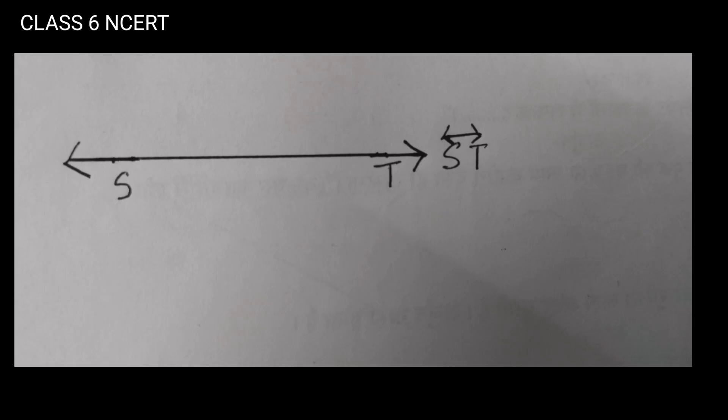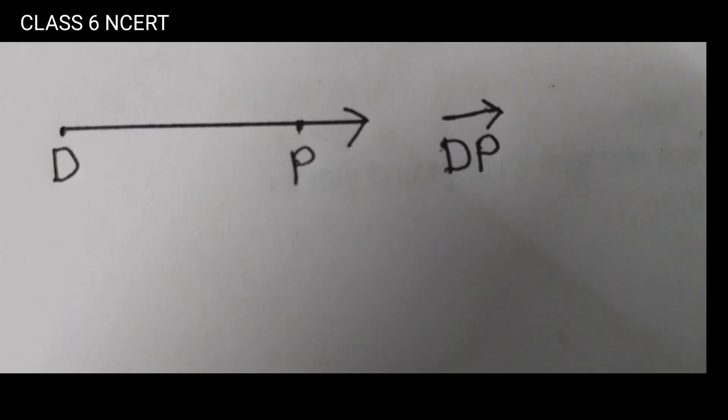It is denoted by line ST, capital letters ST with a line on top, a double arrowhead, or sometimes by a single small letter like M. A ray is a portion of a line starting at a point D and going in one direction indefinitely. It is denoted by ray DP, capital DP with a ray on top, where P is another point on the ray.